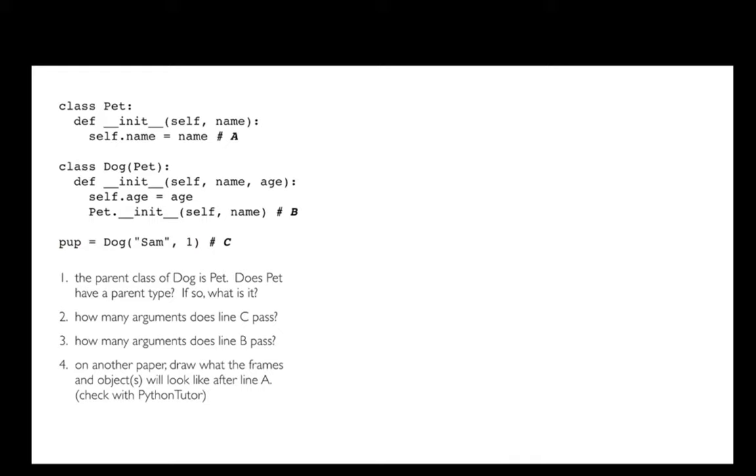First question: the parent class of dog is pet. Does pet have a parent type, and if so, what is it? First off, I'm not explicitly passing anything in, but there's an implicit type. When I don't say what it is, the type is object. Object is the name of the parent class of all other classes, perhaps confusingly. There is a type and that's object.